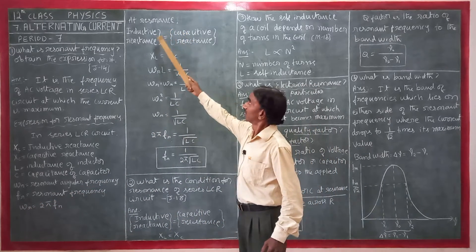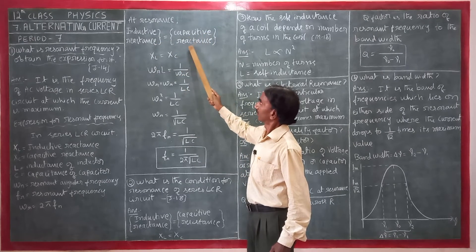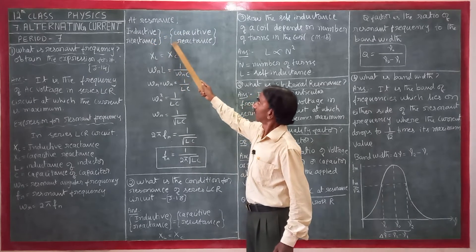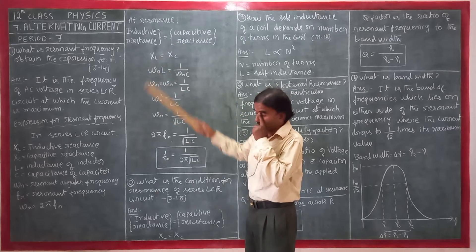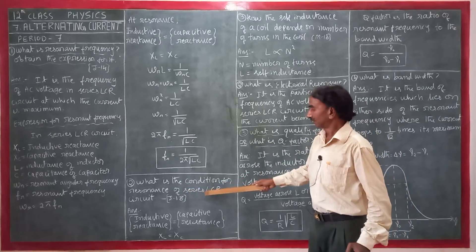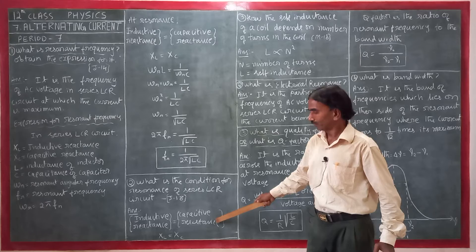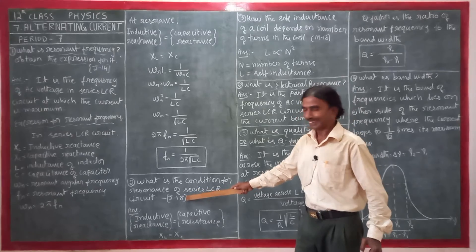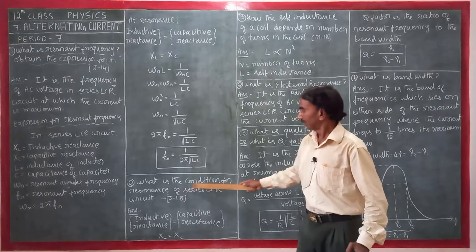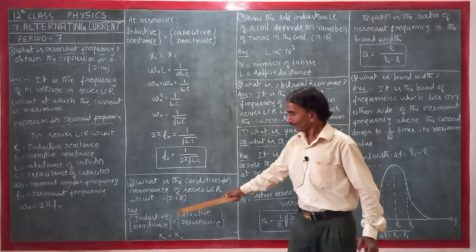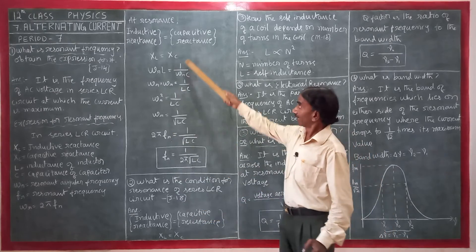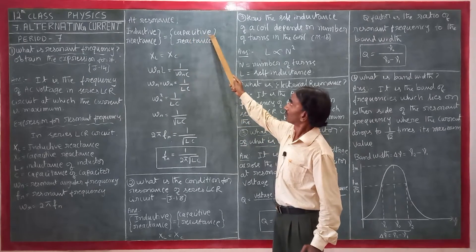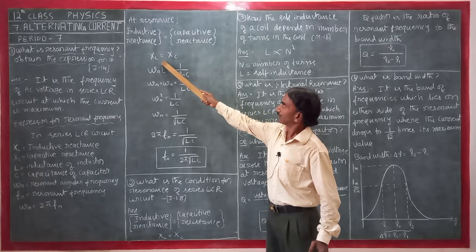At resonance, inductive reactance is equal to capacitive reactance: XL = XC. This is also a separate very important question — what is the condition for resonance of an LCR circuit? The answer is: inductive reactance is equal to capacitive reactance. It comes in four-mark and five-mark questions.